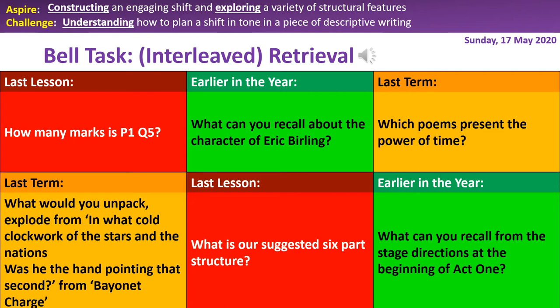Welcome back, Year 10. This is our second week on Paper 1 Question 5. As usual, we'll start our lesson with our interleaved retrieval bell task. The questions in the red boxes are from last week, the questions in the amber boxes are from Power and Conflict Poetry from last term, and the questions in the green box are from An Inspector Calls. Pause this recording and spend a good five minutes making really detailed notes and recalling everything you can, especially from Power and Conflict Poetry and An Inspector Calls.